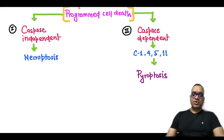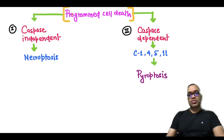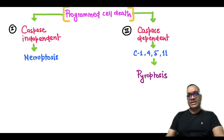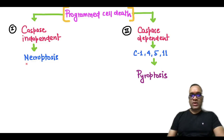This high-yielding short is about programmed cell death, which is necroptosis. Programmed cell death can be caspase-dependent or caspase-independent. Caspase-dependent will be discussed in another episode; here we are going to focus on necroptosis, which is programmed cell death without caspase.